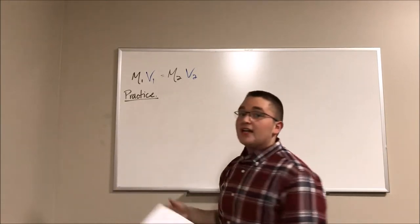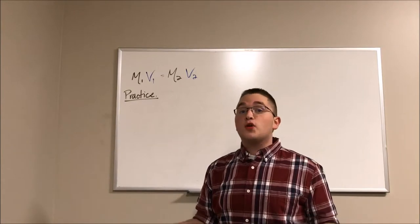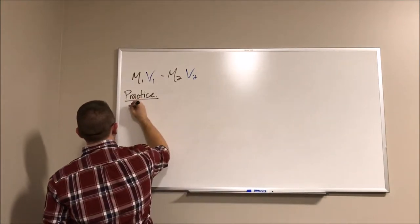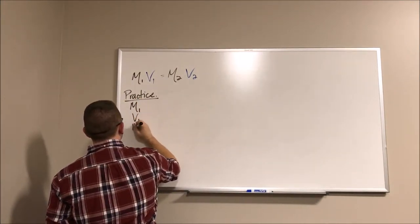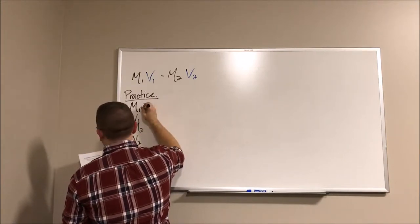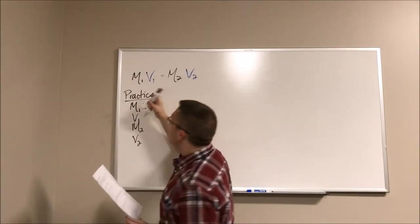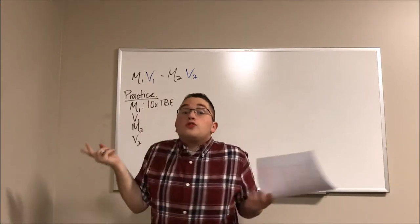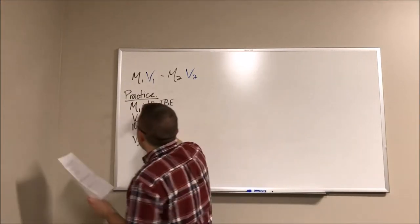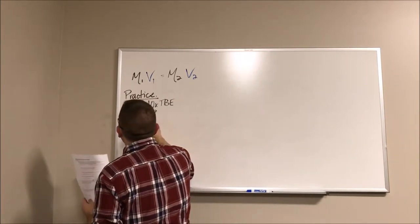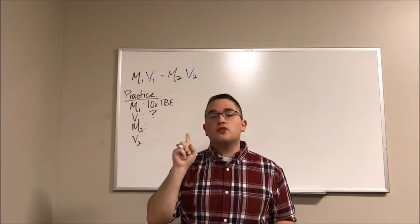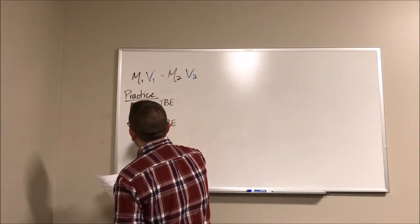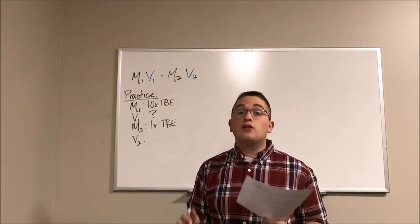So again, we start with our equation and we got to start with what we know. When we're working on our practicals or our quizzes, it's a very good habit to write down all the variables and what those correlate to. So we know that M1 is going to be 10 because we're starting off with 10X TBE. Volume 1, shoulder shrug, we don't know that yet. M2, molarity of our final solution, we want to reach a 1X solution. And lastly, V2, the problem tells us that we want to create a total of 92 liters.